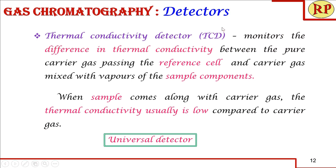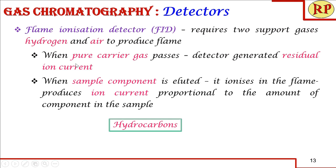The first detector is the thermal conductivity detector, TCD, which is called a universal detector because it can be used for many applications. It monitors the difference in thermal conductivity between the reference compartment and the sample compartment. When the sample enters the sample compartment, the thermal conductivity slightly decreases compared to the reference cell, and this difference is sensed and the signal is sent to the data processor.